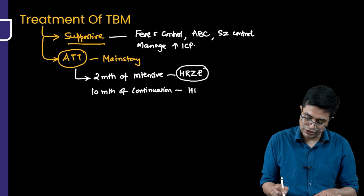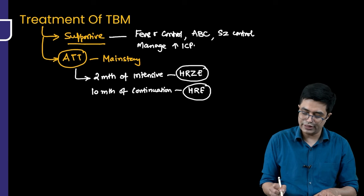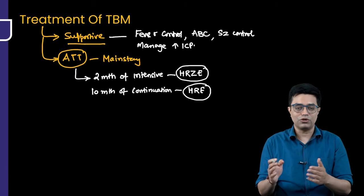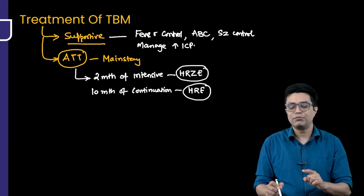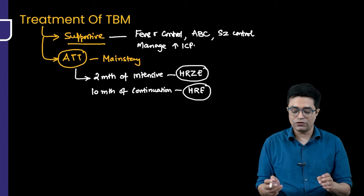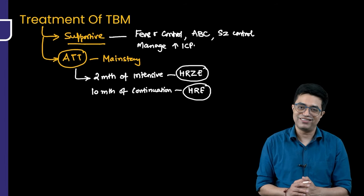The continuation phase uses three drugs: HR and P. Some textbooks incorrectly write HRZE for two months and HR for 10 months. The correct regimen is two months of four drugs and 10 months of three drugs.